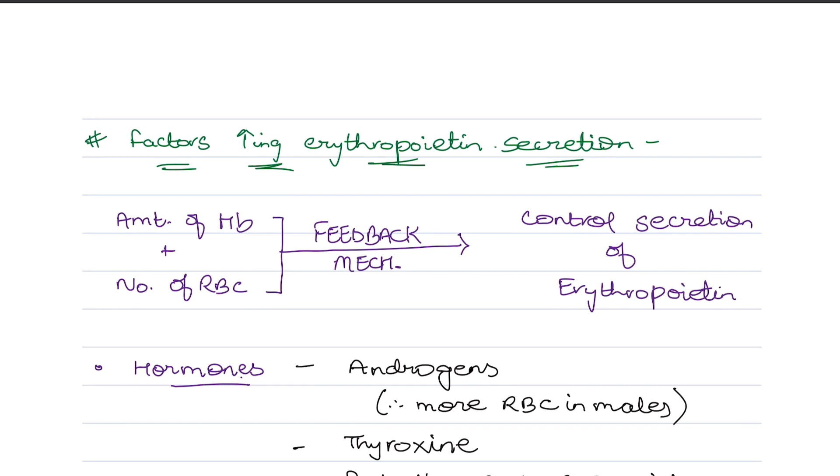Now coming on to the factors affecting erythropoietin secretion. All these things we can see. Now we can see that erythropoietin secretion is regulated in many ways. First of all, the whole mechanism is stuck on two things: one is the amount of hemoglobin and the other is the number of RBC.